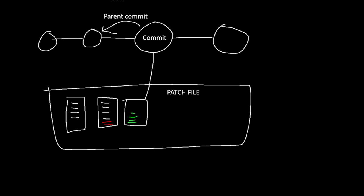So you can think of it as all the files having a list of things added or deleted. If you had a new file, it would look like this. If you deleted a file, it would look like this. And this is a file with some lines removed. That is what a commit is — this is a patch file.